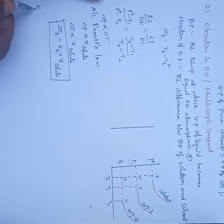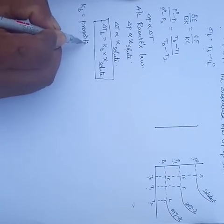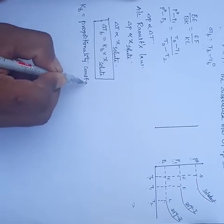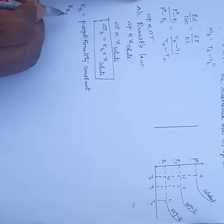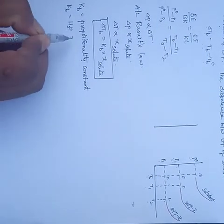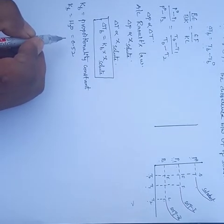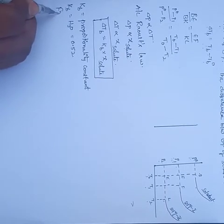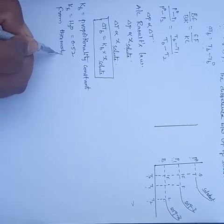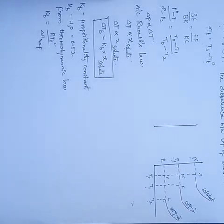Here Kb is the proportionality constant, also known as the ebullioscopic constant. The Kb value for water is 0.52. This Kb value depends upon the nature of the solvent. From thermodynamic laws, Kb equals R times T0 squared divided by the change in enthalpy of vaporization.